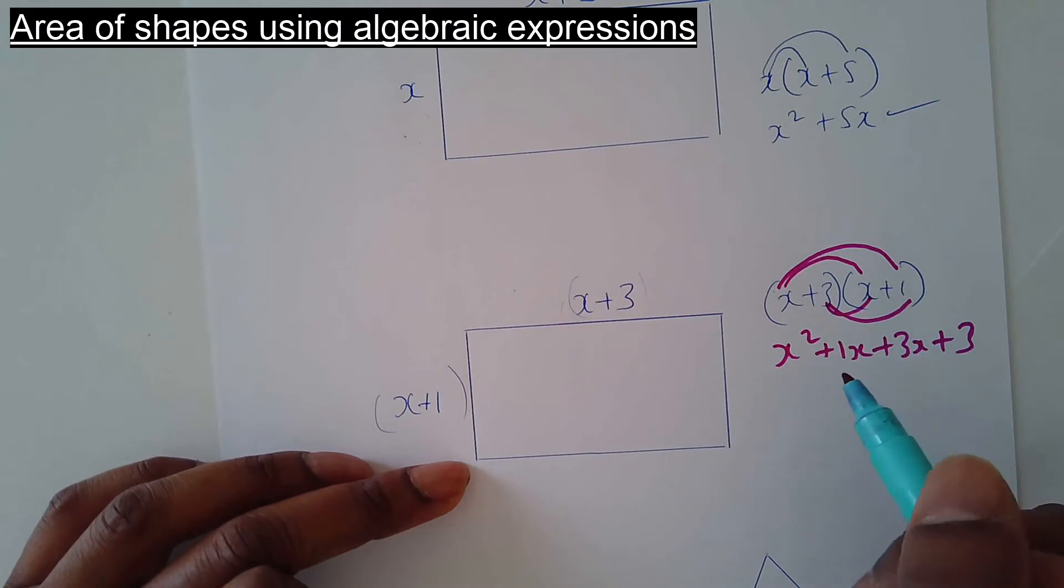Now simplify. You've got x squared by itself, and then you've got 1x plus 3x, like terms. That's 4x. And then you've got the plus 3 by itself. That is the answer.